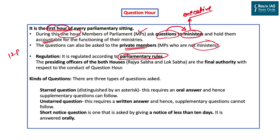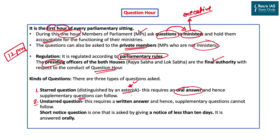Zero Hour starts at 12 p.m. noon — hence the name — and it is also India's own invention. The presiding officers of both houses — the Speaker in Lok Sabha and the Chairman in Rajya Sabha — have final authority over the conduct of the Question Hour. There are three kinds of questions discussed under Question Hour. First, the starred question, distinguished by an asterisk, requires an oral answer and supplementary questions can follow — the star is a warning to the minister to be ready for further questions. Second, the unstarred question, which is the opposite — it is a written answer and does not allow supplementary questions. Third, the short notice question, which requires a notice of less than 10 days.